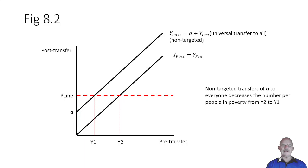It decreases the number of people in poverty from Y2 to Y1. So the universal transfer is effective to move this group of people Y1 to Y2 out of poverty. We used to have all of those people below the poverty line. Now we only have a smaller number of people below the poverty line.